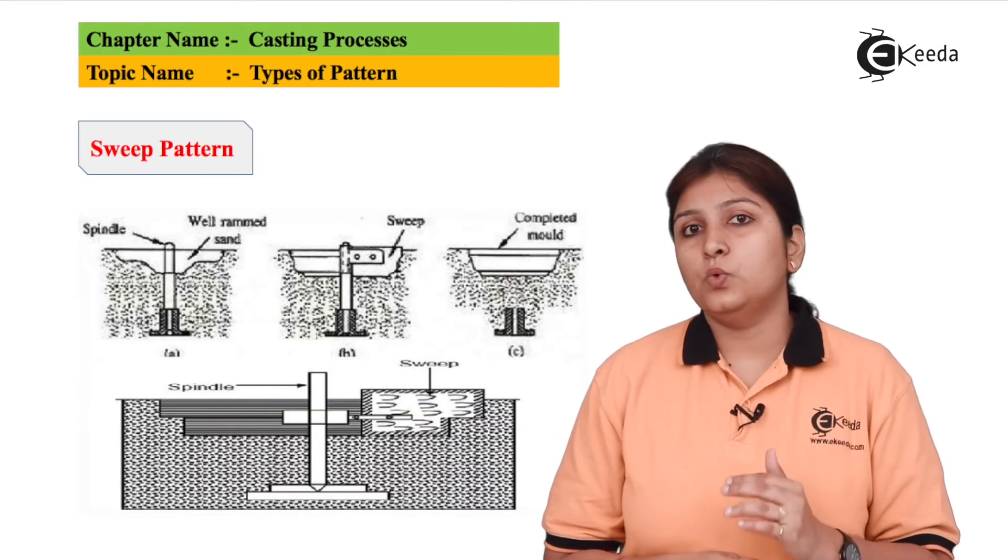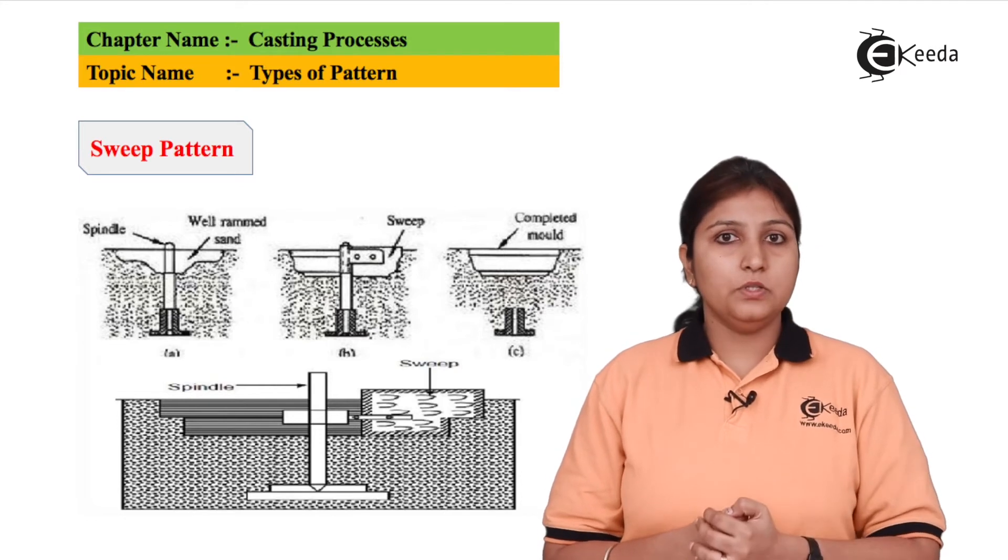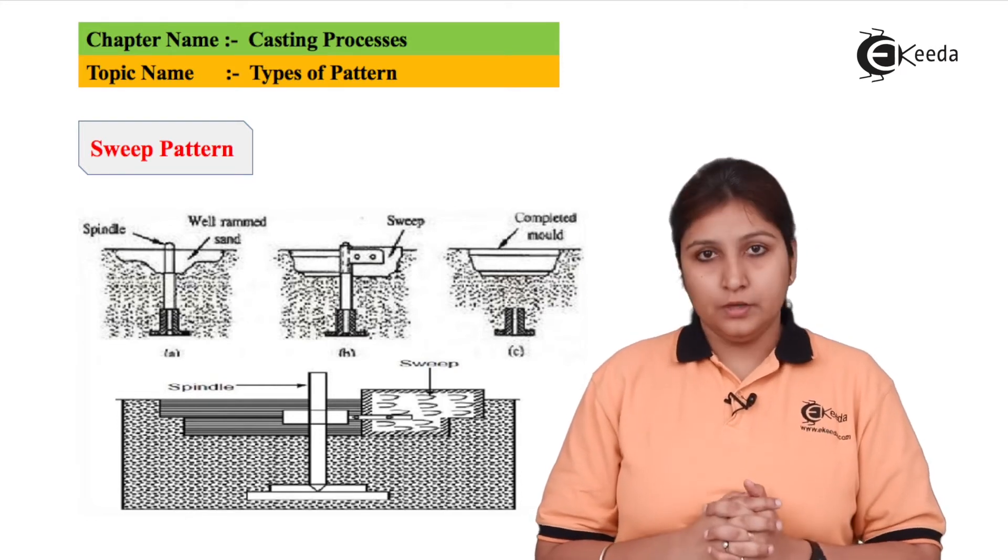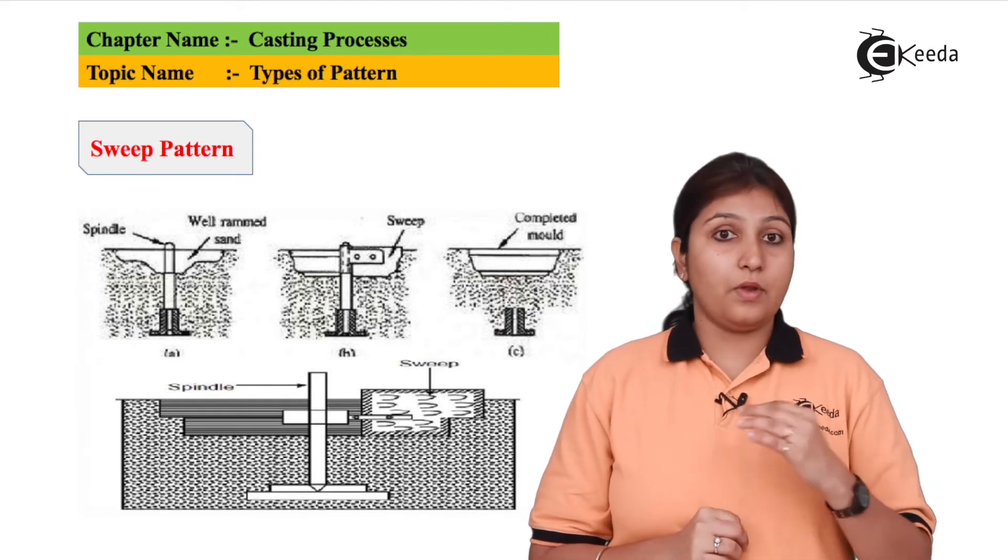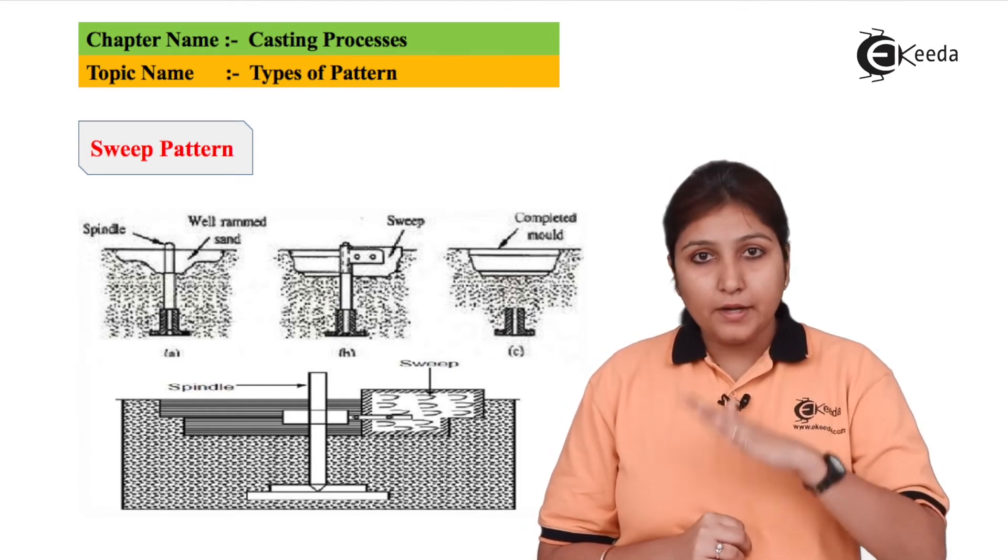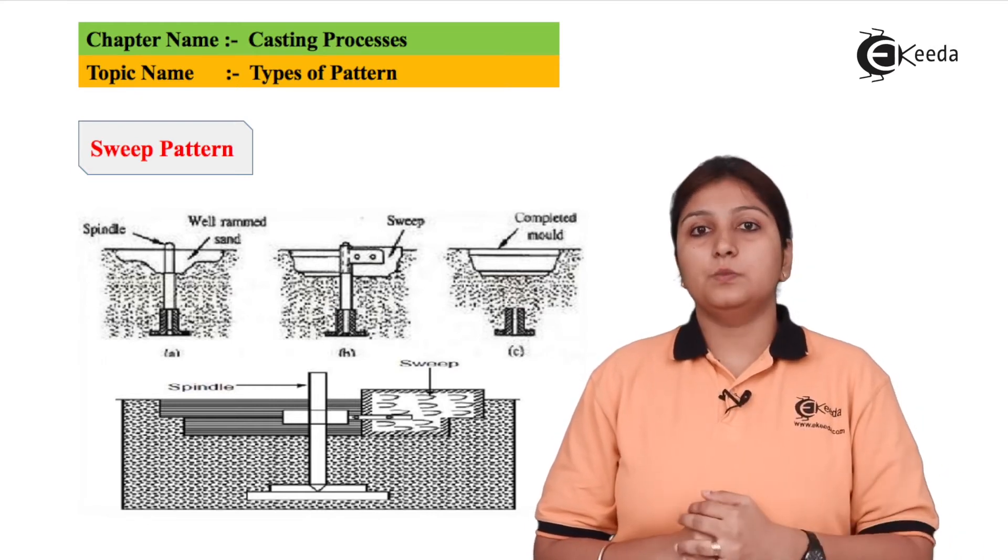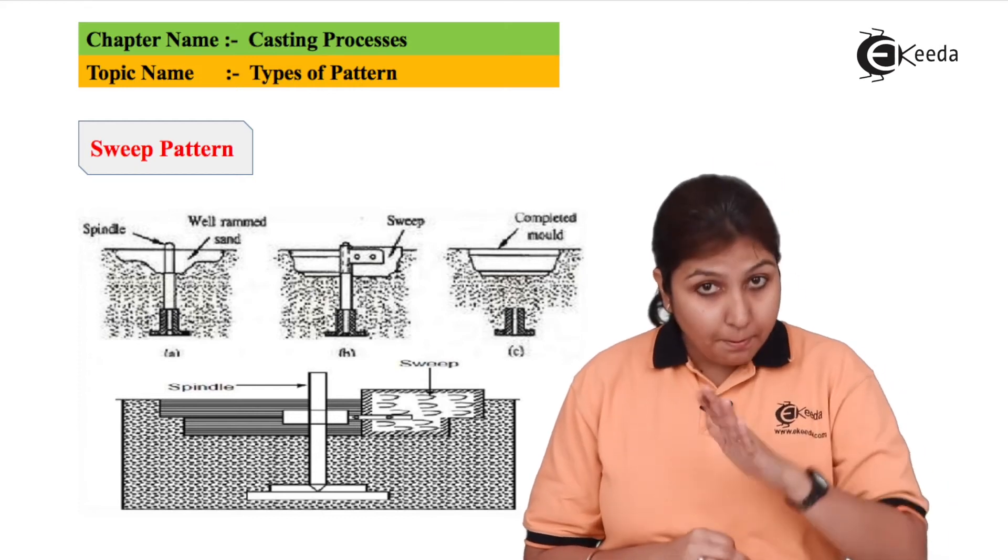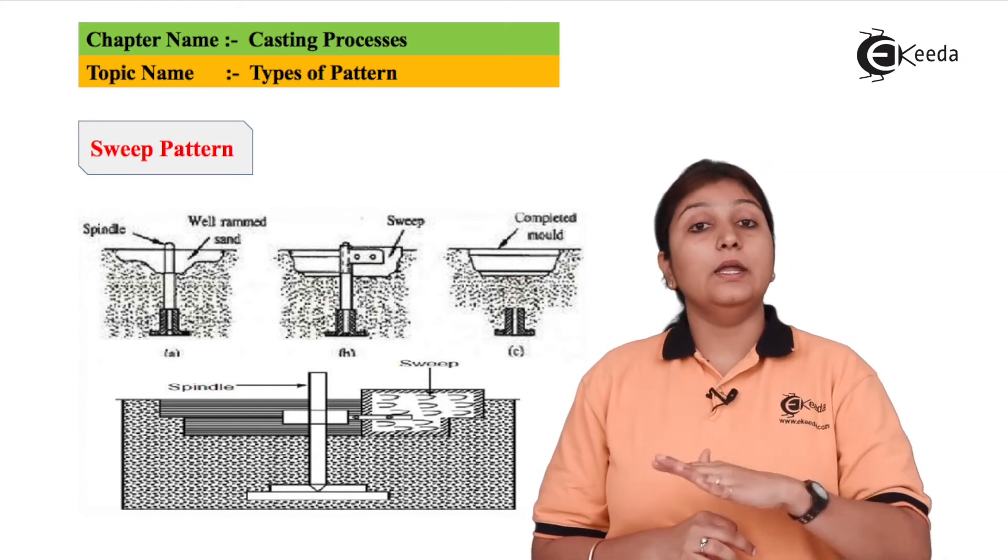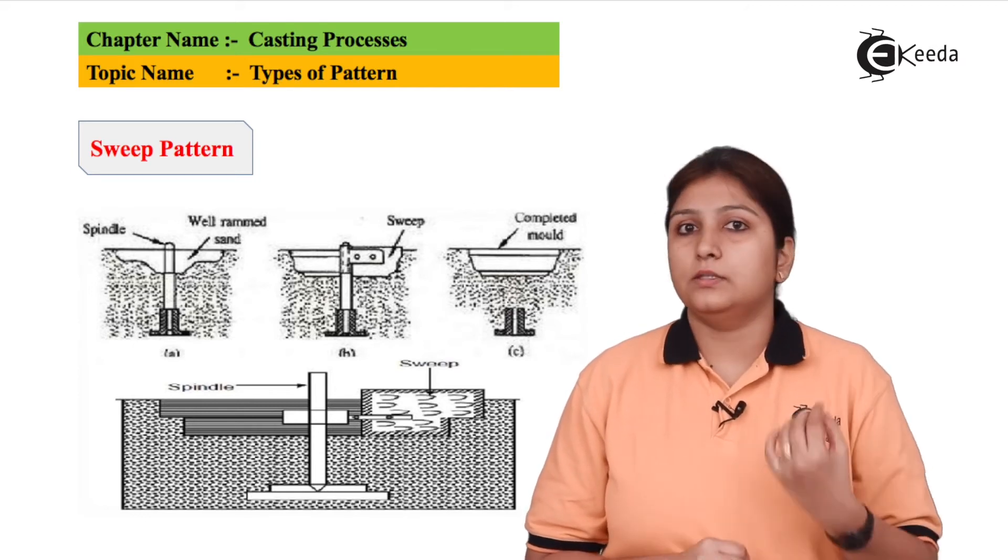So this is sweep pattern. It is a bit complex pattern in that what happens is there is a straight spindle, sand is rammed. Ramming, ramming in the sense what? Ramming is patting the sand so that it should fill the entire space. We put sand, we ram it, we put sand, we ram it, we pat the sand so that it gets fitted and there is no porous air cavity inside the sand.